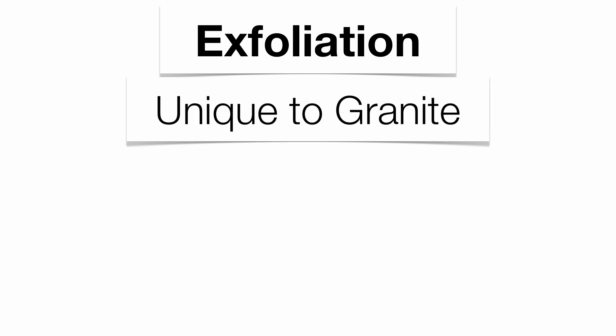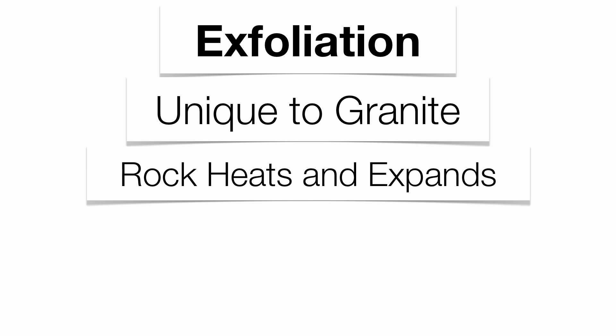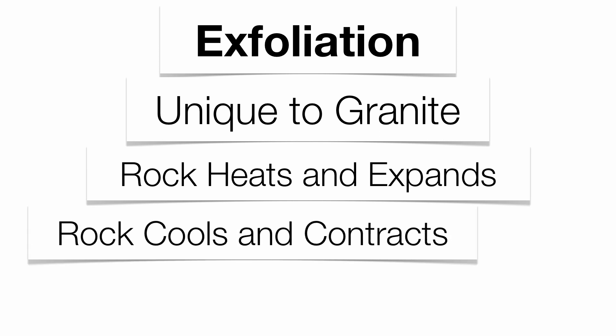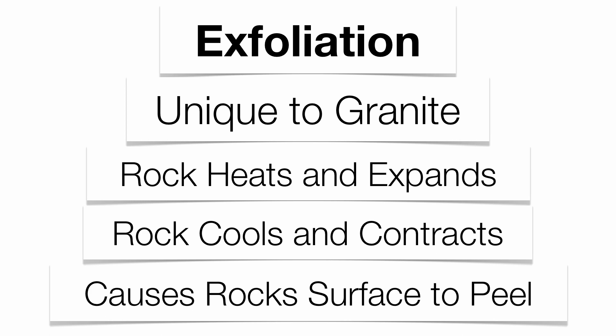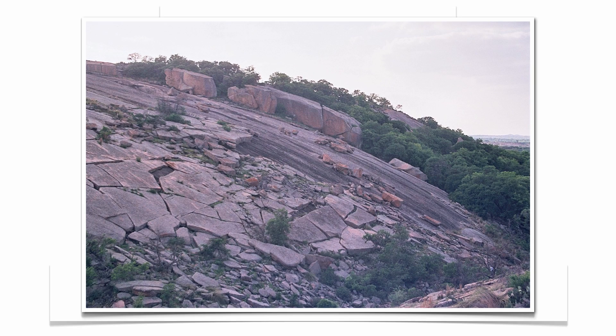Exfoliation is a type of physical weathering found only with granite. Granite heats up and expands, then cools off and contracts. Thousands of years of this expansion and contraction cause the outer layer of rock to eventually break apart and peel away, almost like a shell on a hard-boiled egg. You tend to get big slabs of granite that break away from the original piece — that's exfoliation.